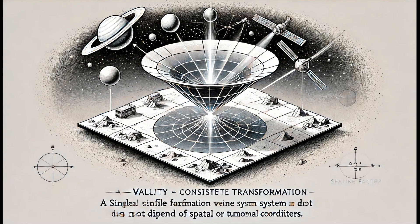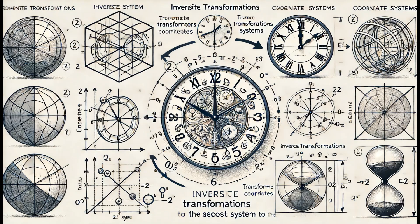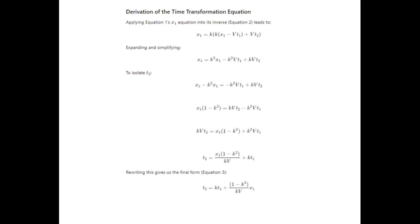The inverse transformations are then provided, explaining how to transform coordinates back from the second system to the first. The relevant equation for transforming time coordinates is derived, showing how time in one system relates to both time and space coordinates in the other system.